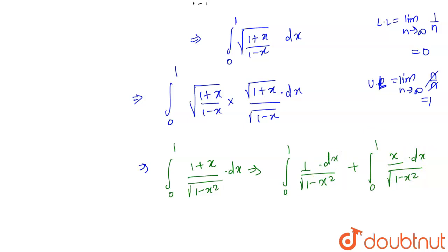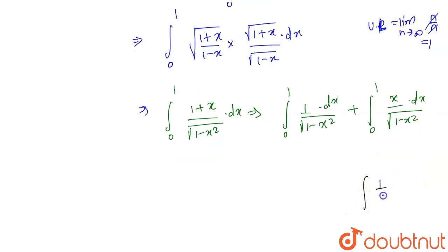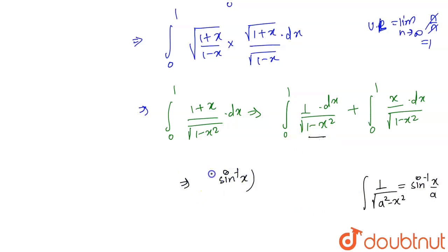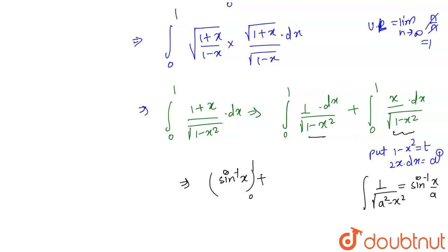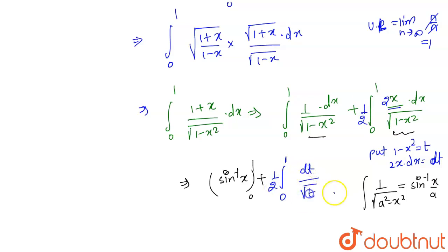For the first integral, we use the formula: ∫1/√(a²−x²) dx = sin⁻¹(x/a). Here a=1, so it becomes sin⁻¹(x) with limits 0 to 1. For the second integral, we substitute t = 1−x², so that 2x dx = dt, giving (1/2)∫dt/√t.